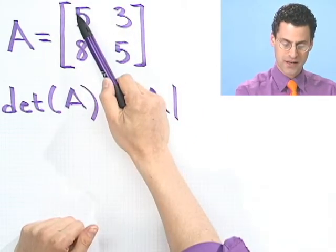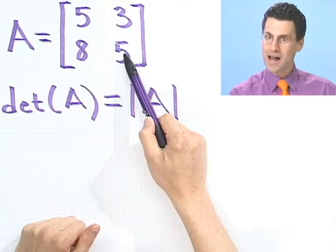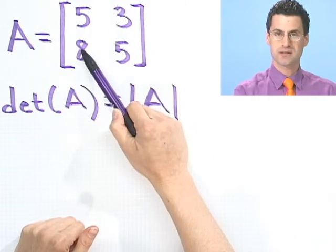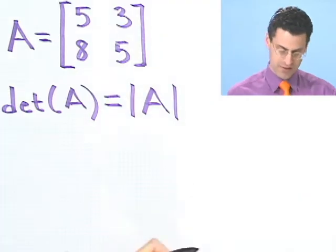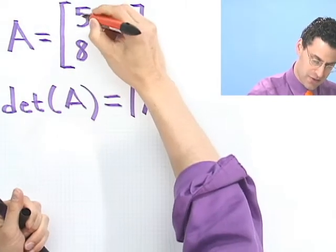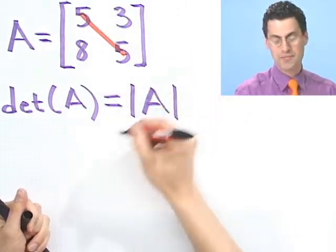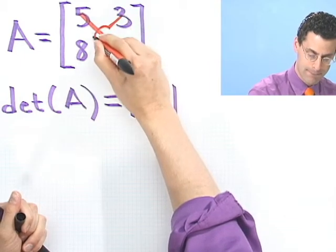So what you do is you take this times this minus this times this. It's sort of a cross thing. If you think about it with a two by two matrix, it's easy to see. You just take across this and then minus that.